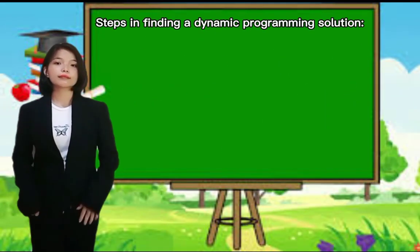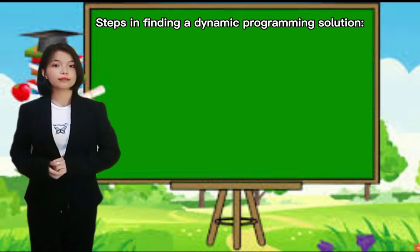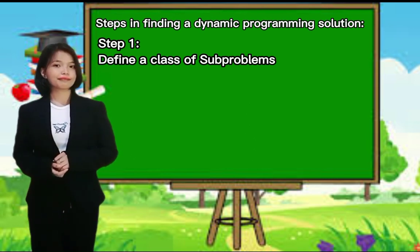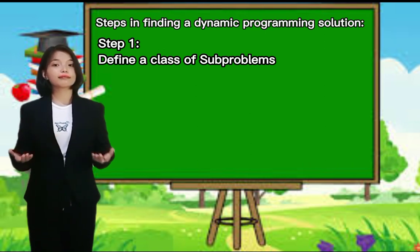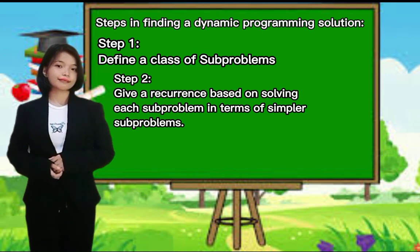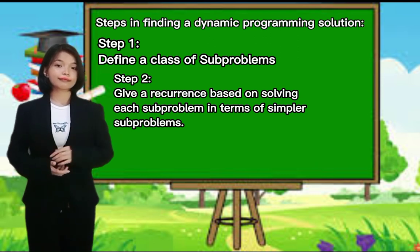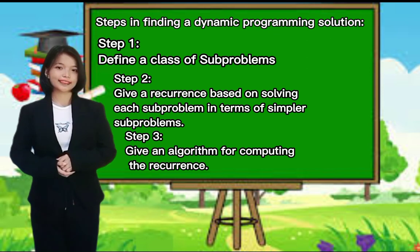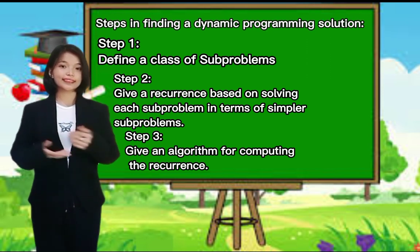There are three steps in finding a dynamic programming solution to a problem. Step 1: Define a class of subproblems. Step 2: Give a recurrence based on solving each subproblem in terms of simpler subproblems. Step 3: Give an algorithm for computing the recurrence.